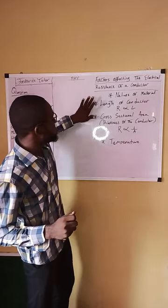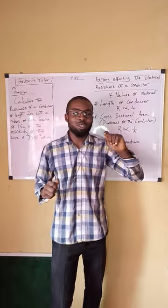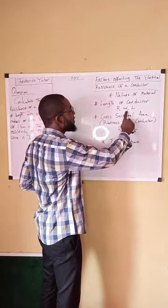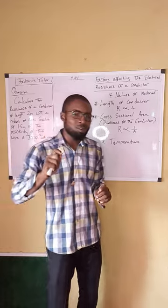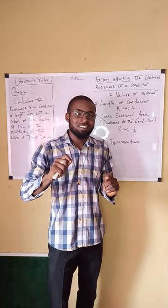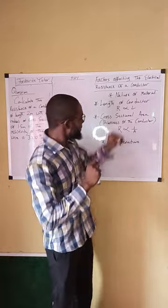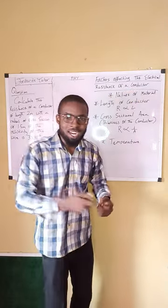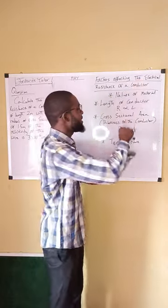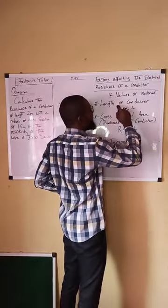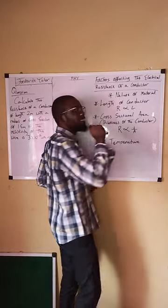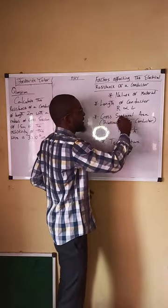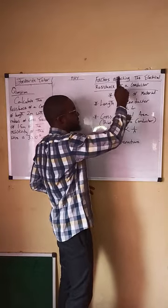Number two is the length of the conductor. The resistance is directly proportional to the length of the conductor. So if the wire is very long — if the length increases — the resistance will increase. That is what it means by directly proportional to each other.